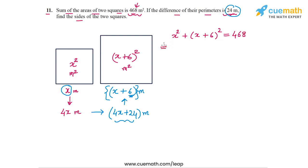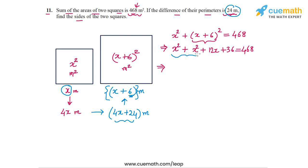So we have x squared plus (x plus 6) whole squared equals 468, which gives us a quadratic equation. Let's expand and simplify into standard form. We get x squared plus x squared plus 12x plus 36 equals 468. Collecting terms: 2x squared plus 12x plus 36 minus 468 equals 0, which gives 2x squared plus 12x minus 432 equals 0.